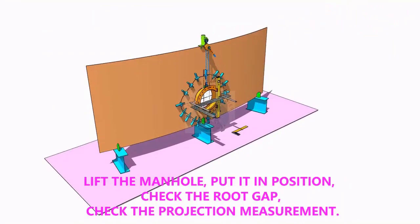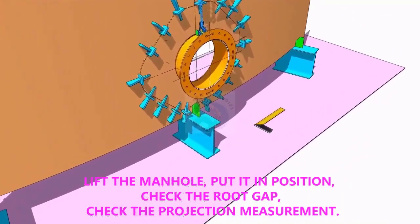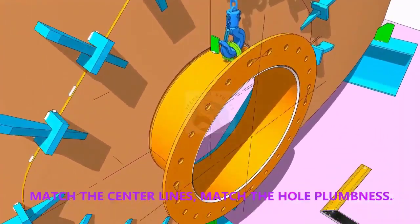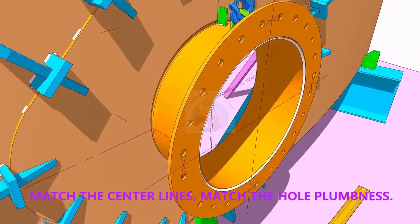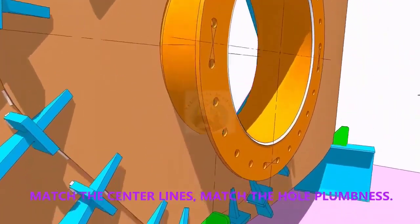Put the manhole in its position. Correct the plumbness. Correct the projection of the manhole. Correct the gap. Check again the plumbness.